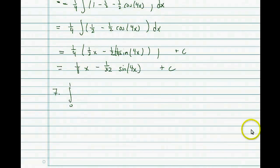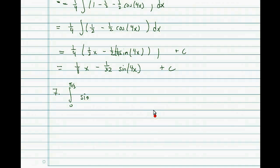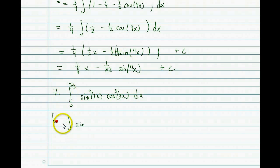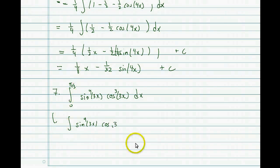Now we're going to go through problem seven on the handout. This is a definite integral: the integral from zero to pi over three of sine of 3x to the fourth power times cosine of 3x to the third power. We need to find the antiderivative and then plug in the limits, but it'll be easier to find the indefinite integral first.